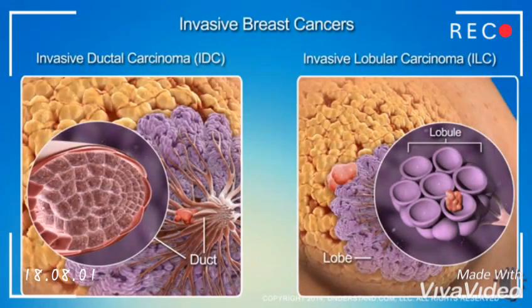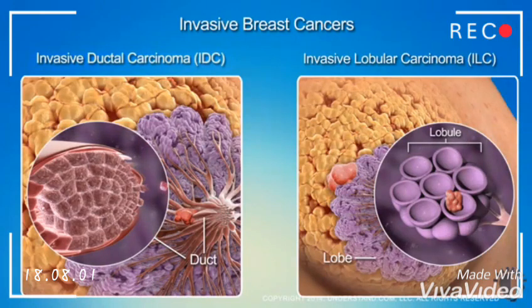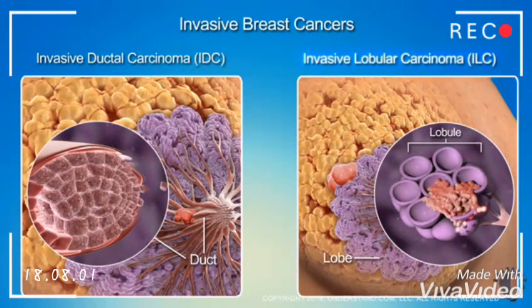About 80 percent of invasive breast cancers start in the ducts and are therefore called invasive ductal carcinomas, or IDC. Invasive cancers that start in the lobules, called invasive lobular carcinoma, or ILC, account for around 10 to 15 percent of invasive breast cancers.